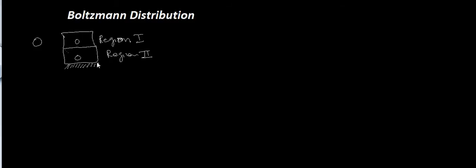When you look at the overall concentration of these molecules, region two will have more molecules as compared to region one. The Boltzmann distribution gives us the distribution of molecules in region one versus region two as a function of the chemical potential.